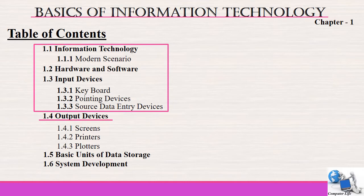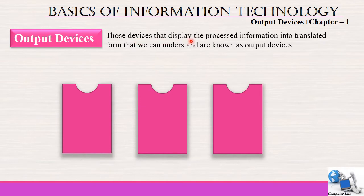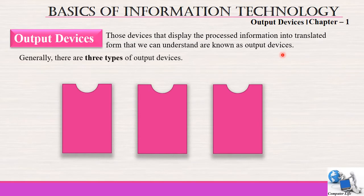Today we will study output devices, in which we will cover screens, printers and plotters. Output devices are those devices that display the processed information in a translated form that we can understand. Computers understand binary language and process all data in binary form, so output devices translate that processed information into our language that we can understand.